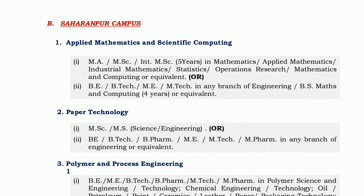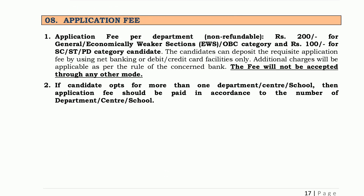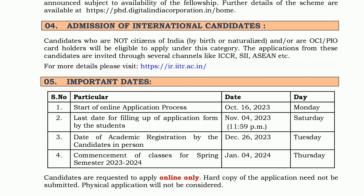At Saranpur campus, programs are available in Applied Mathematics and Scientific Computing, Paper Technology, and Polymer and Process Engineering. Application fee per department is Rs. 200 for General, EWS, and OBC category, and Rs. 100 for SC, ST, and PWD category.